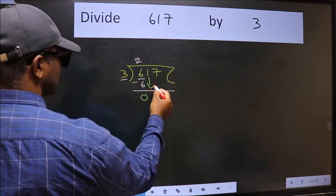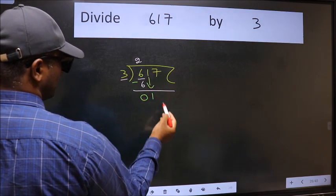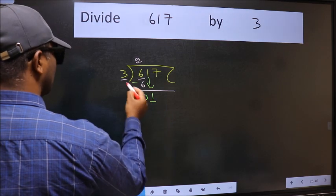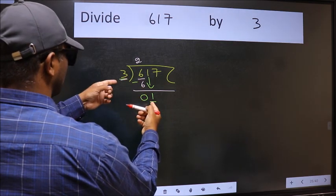After this, bring down the beside number. So 1 down. Now here we have 1 and here 3. 1 is smaller than 3.